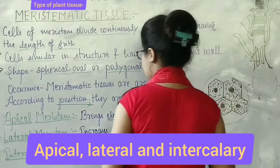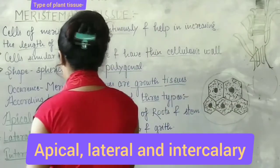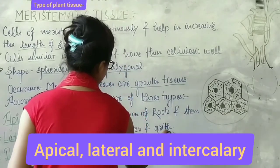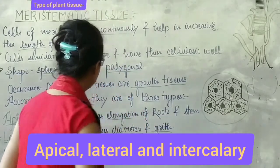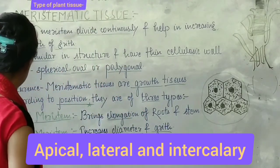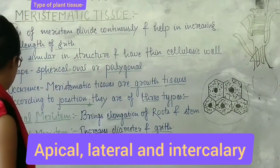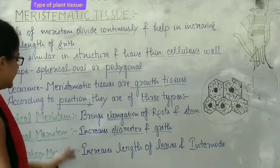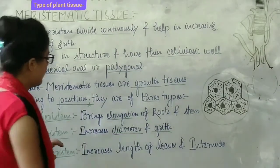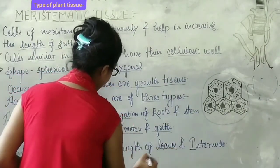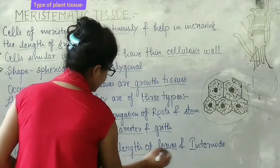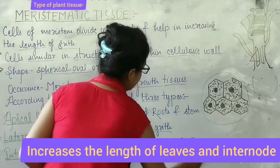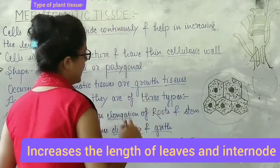Lateral meristematic tissue increases the diameter of the plant's growth. The last type is intercalary meristematic tissue, which increases the length of leaves and internodes. This is found inside the plant between nodes.